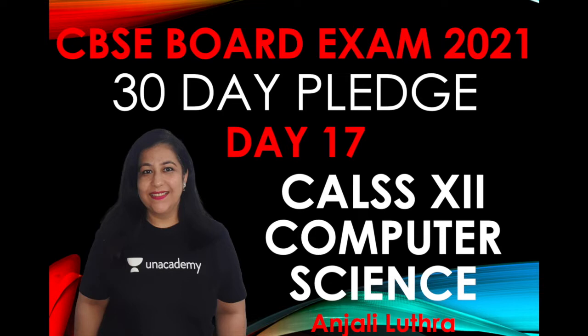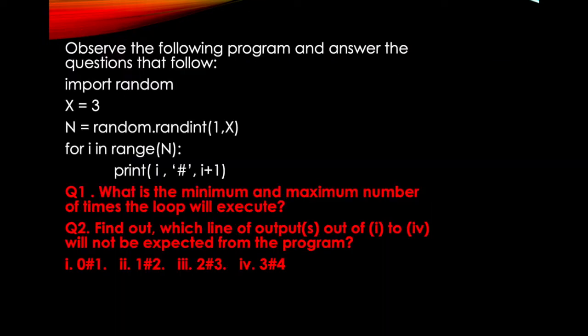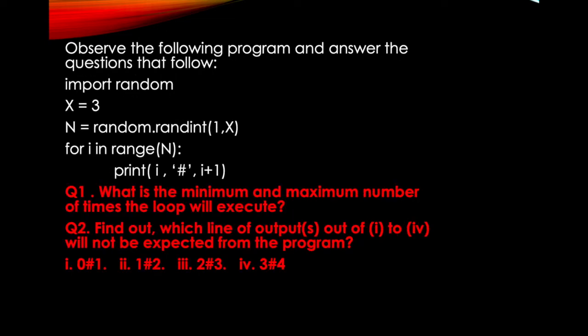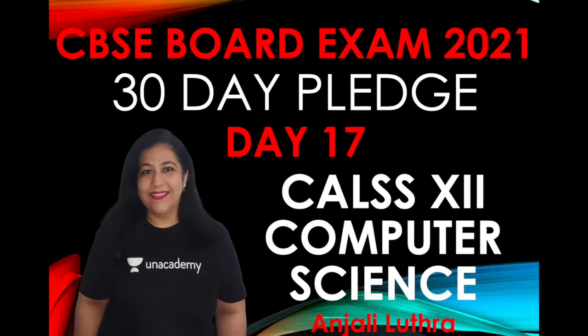Now there is one such library function that we use very extensively in our output questions. You will get 100% a short question in board exam, that is random.random or random.randint. There is difference in both of them, but based on random library, you will get a question, something like this. Where the code is given, then you will be asked what can be the possible outcome. You will definitely get it for two marks.